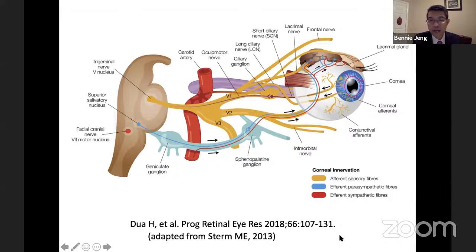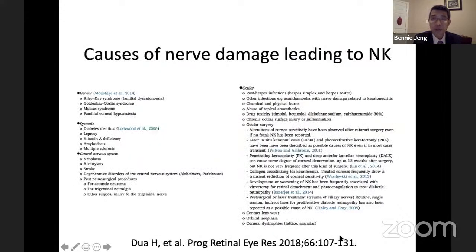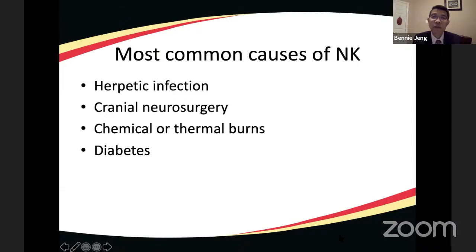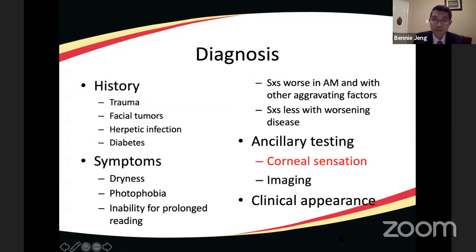The cornea is the most densely innervated part of the body with 7,000 nerve endings per square millimeter, innervated by the ophthalmic division of cranial nerve five, the trigeminal nerve. The most common causes of nerve damage include herpetic infection, cranial neurosurgery involving the nerve, chemical or thermal burns, and diabetes — which can remain subclinical until an insult like ophthalmic surgery occurs.